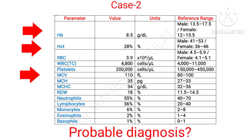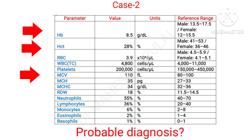In another case, a patient presenting similar symptoms where the CBC report shows reduced HB, reduced hematocrit, but MCV is increased. What will be the probable diagnosis?